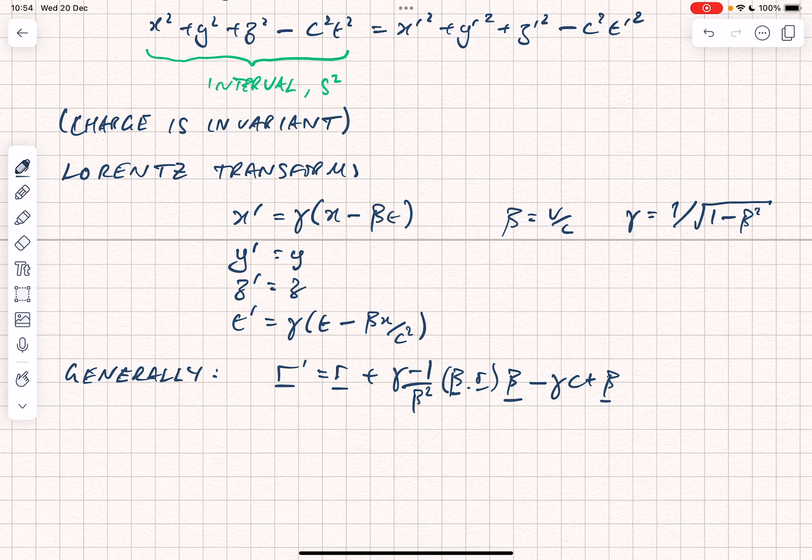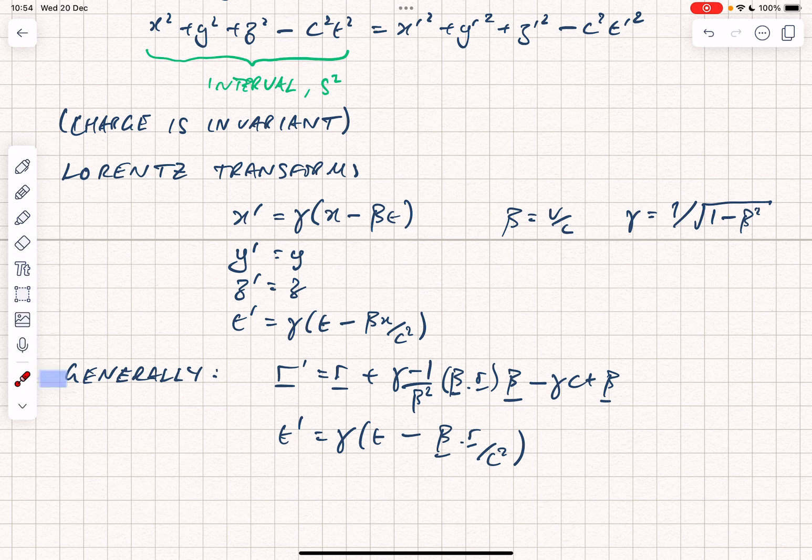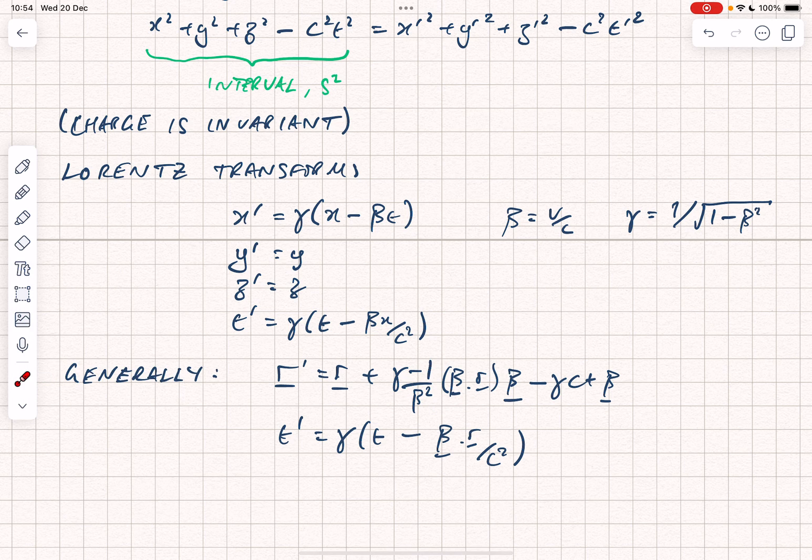And t prime is equal to gamma into t minus beta dotted with r divided by c squared. And all of this business here where you've got these kind of minus factors here are essentially just projecting either the component parallel to the velocity, so that's the beta dot r, and then the minus 1 factor, of course, is just projecting out the perpendicular. The perpendicular parts don't change, which is why we have an r here. The parallel parts do change, and that's what those are the bits which are multiplied by beta.